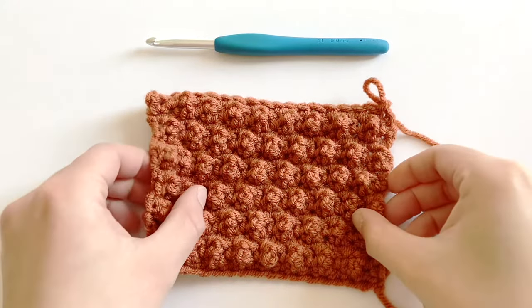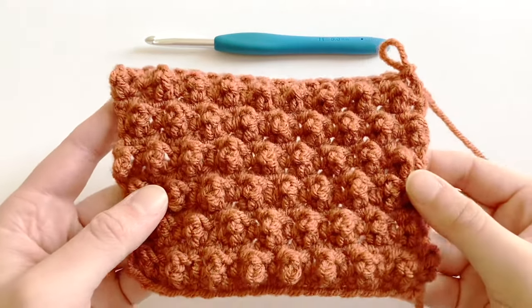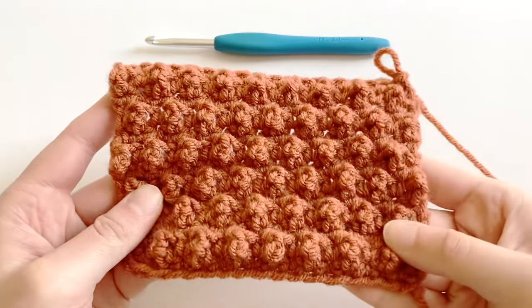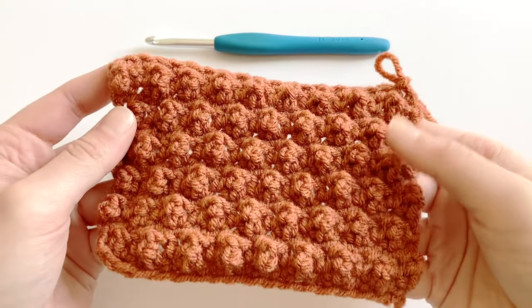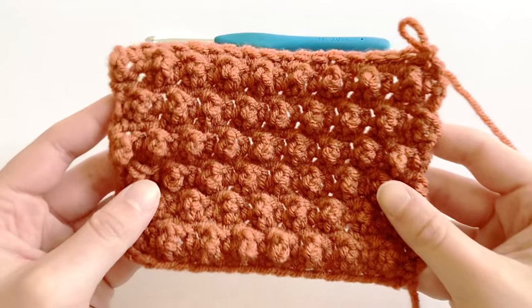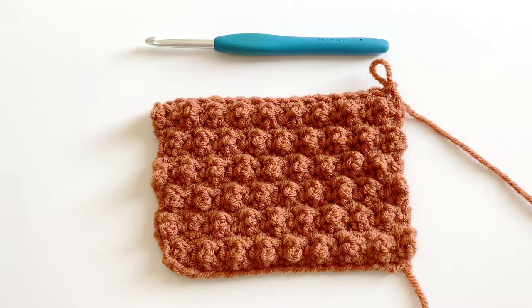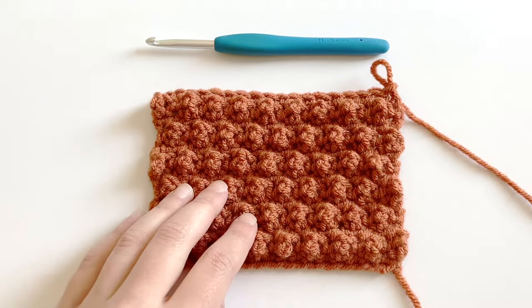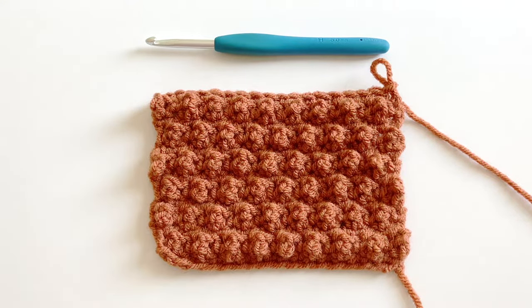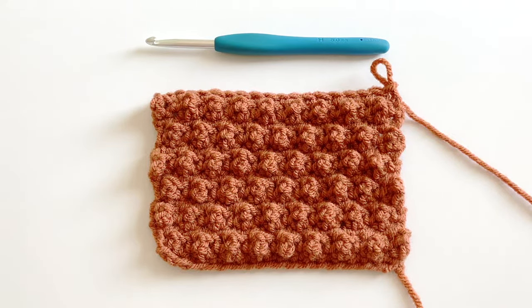And as you can see, it creates this really fun bobbly texture that I'm completely obsessed with. This is one of my absolute favorite stitch combinations, and I have made several patterns using this stitch, so I will make sure to link those below. And if you found this video helpful, please like this video and subscribe for more crochet content and tutorials. See you all next time!